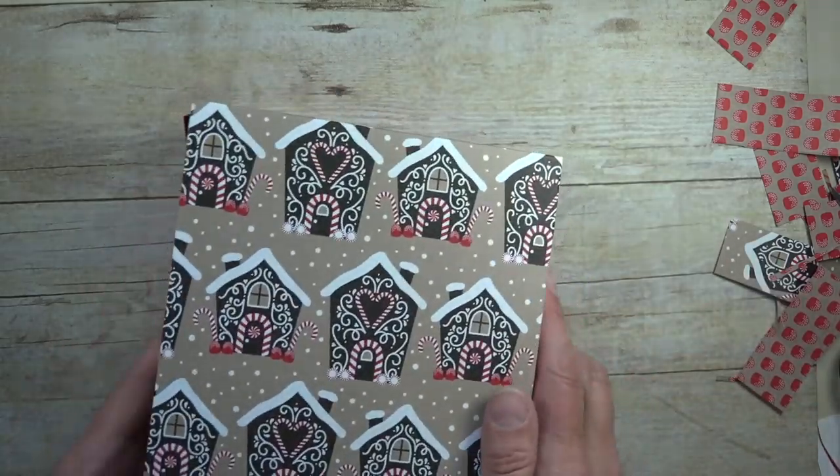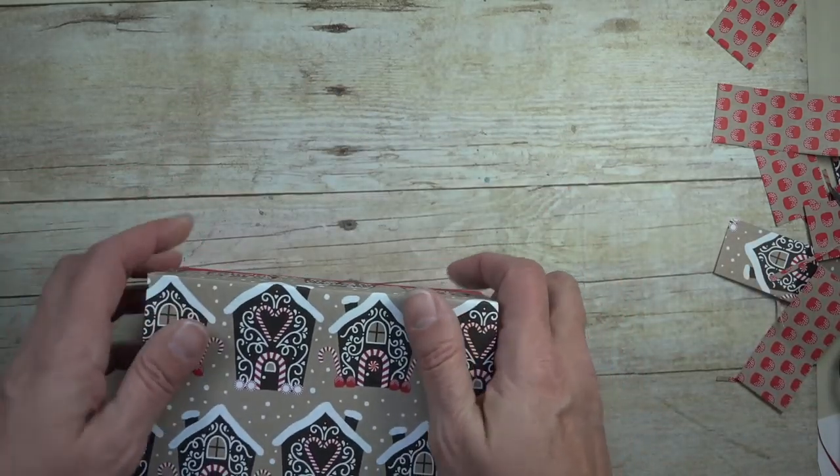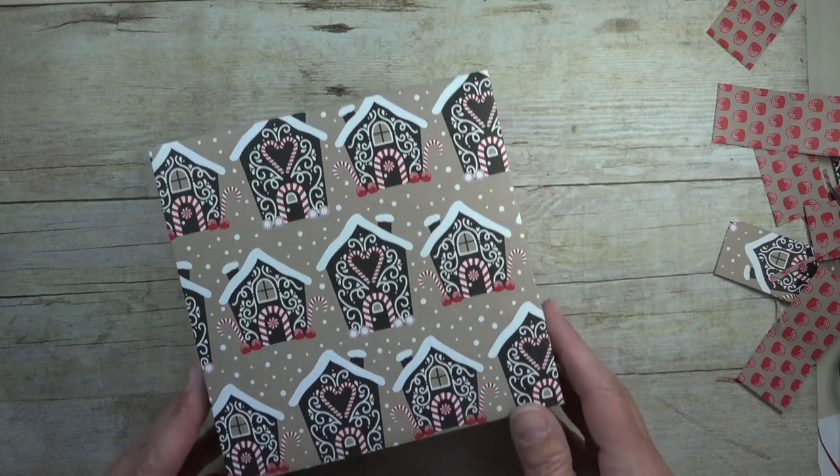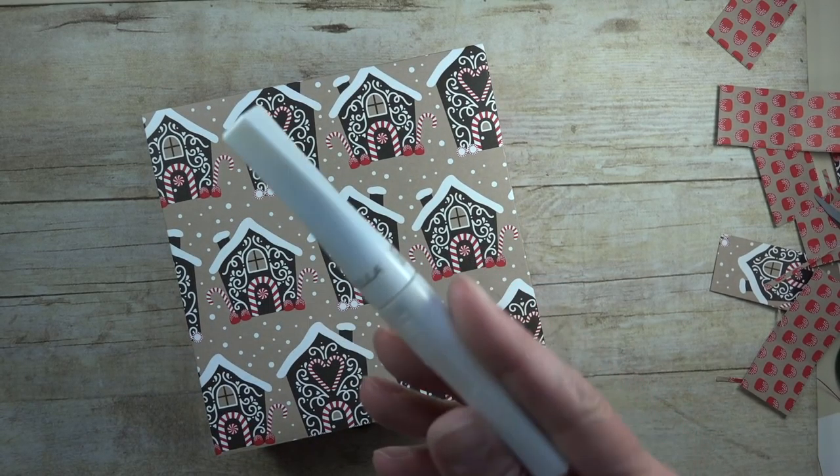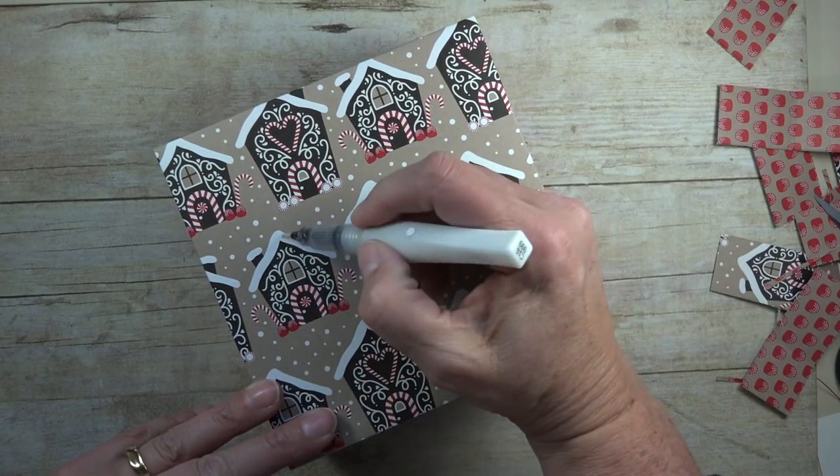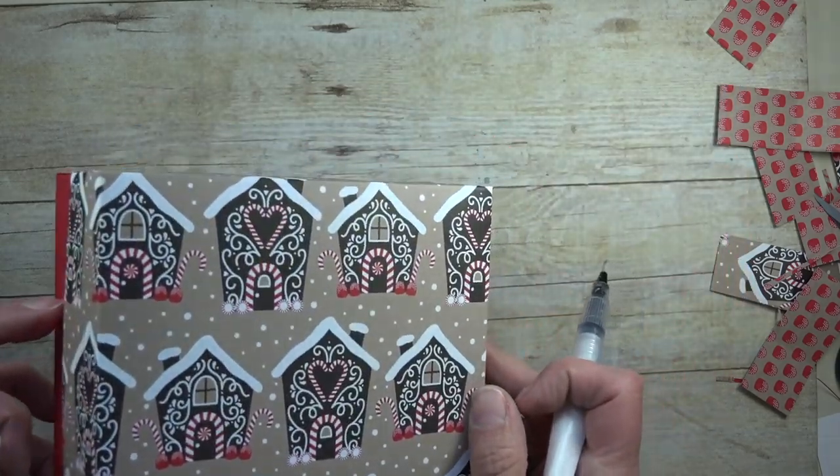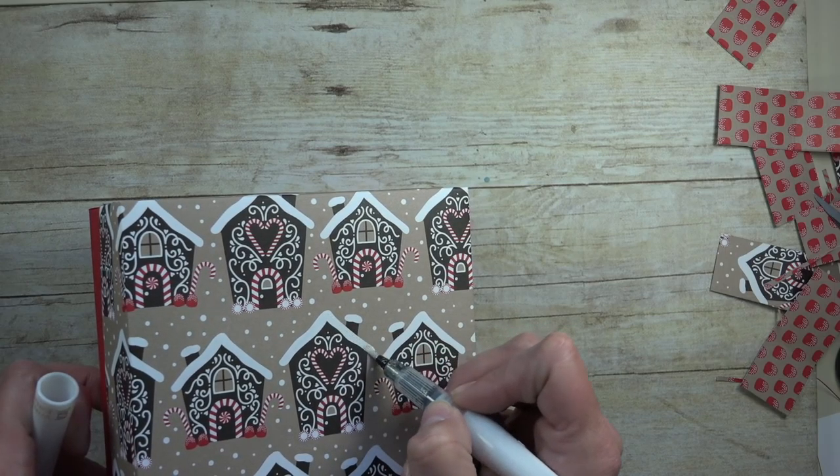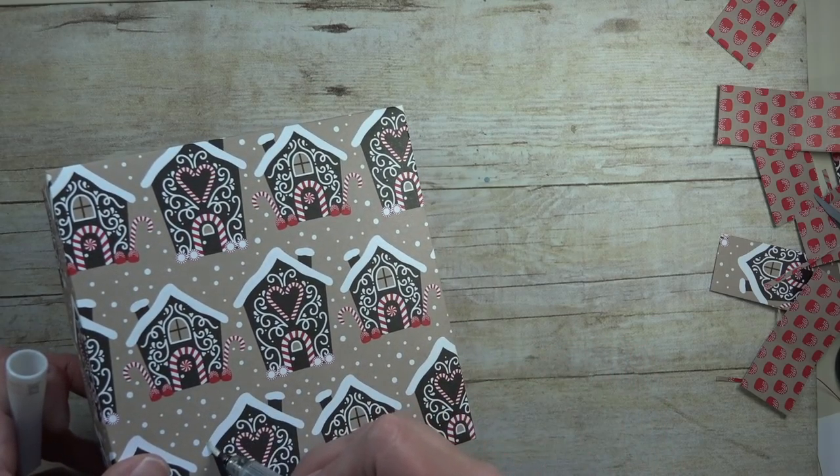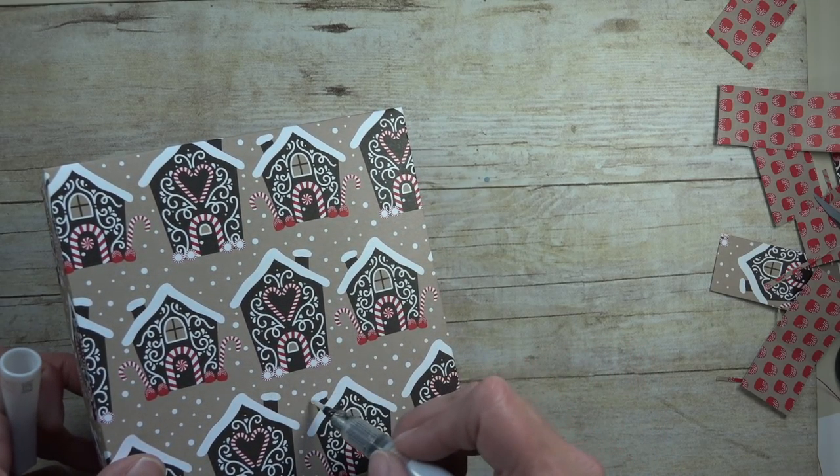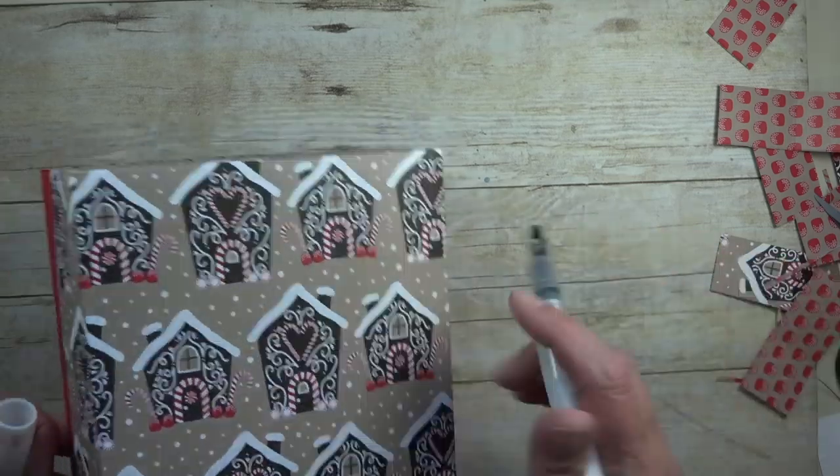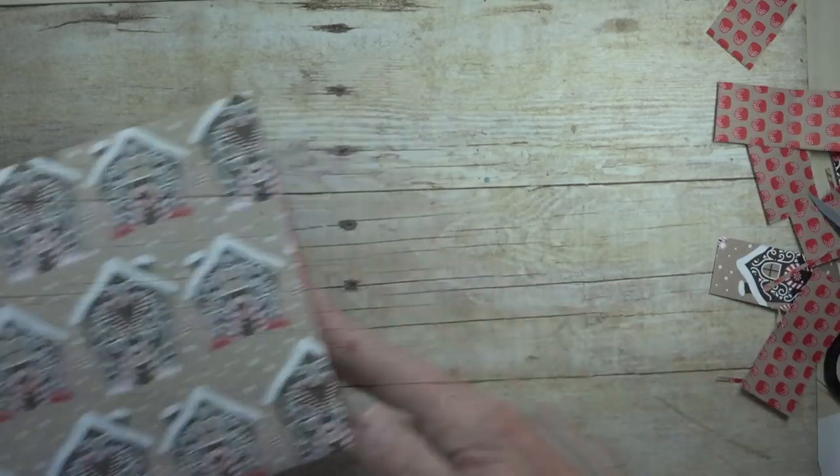How much fun is that? Your lid of your box is going to be a tight fit, but it's going to fit right over the top of your box like that. That's how quick and easy you can make this box. Now I'm going to jazz it up a little bit because I never like to leave well enough alone. I'm going to take a little of our Wink of Stella and add just a bit of glitter. I'm just going to go around and add some glitter to the snow on all of these little houses. It just jazzes up your box a bit, gives it a little bit more dimension.